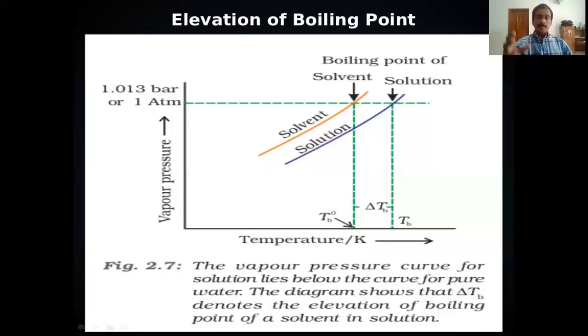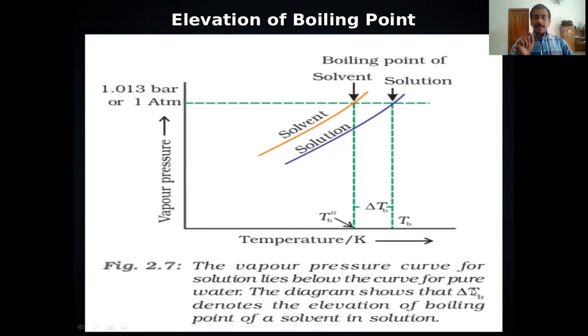We are discussing colligative properties, and today the topic is elevation of boiling point. Elevation means an increase — there is an increase in boiling point when a solvent changes to solution. This increase in boiling point can be understood easily from a graph.